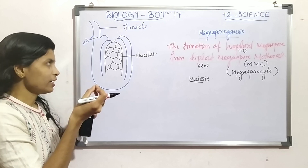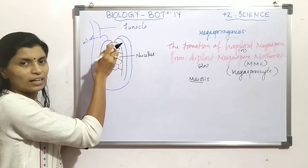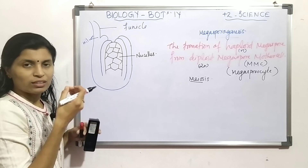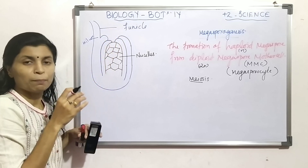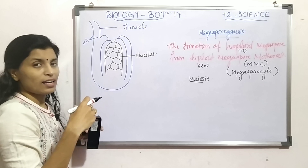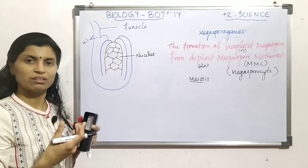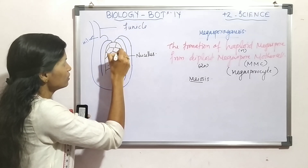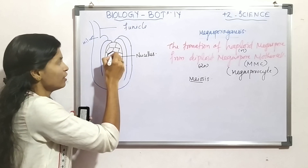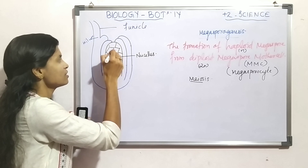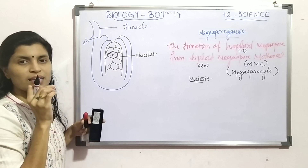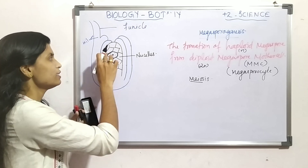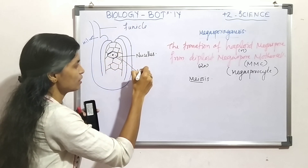Any one cell towards the micropilar end becomes differentiated. That differentiated cell is activated for division. That differentiated cell has a prominent nucleus and dense cytoplasm, and we call it MMC — the megaspore mother cell.